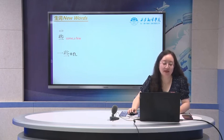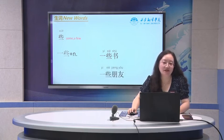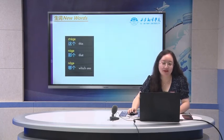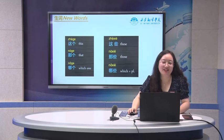些 means some, a few. The usual expression is 一些 plus some noun. For example, some books: 一些书. Some friends: 一些朋友. Before we learned 这个 and 哪个. With 些, we have the plural form: 这些, 哪些.